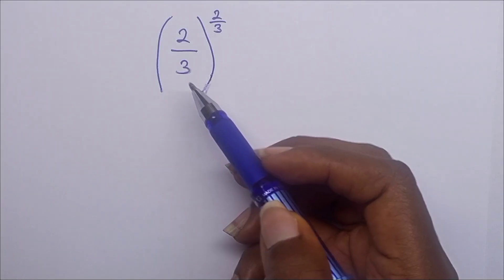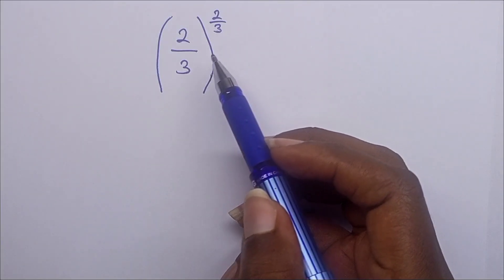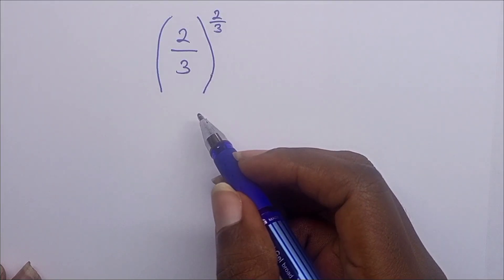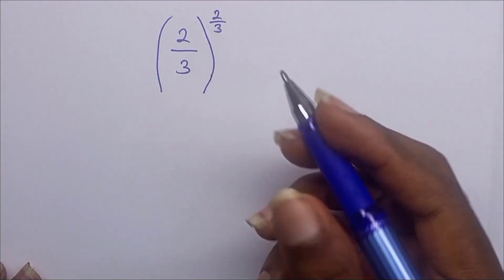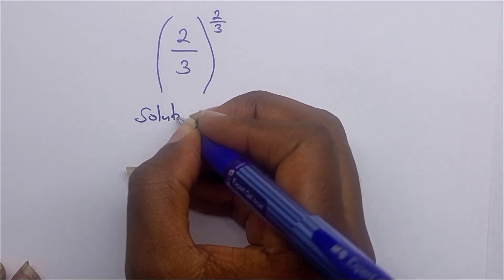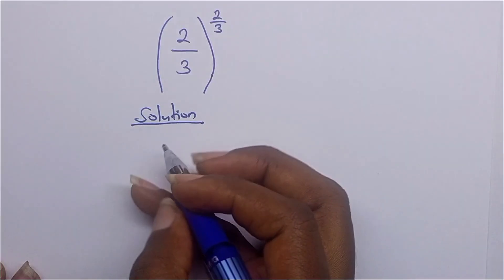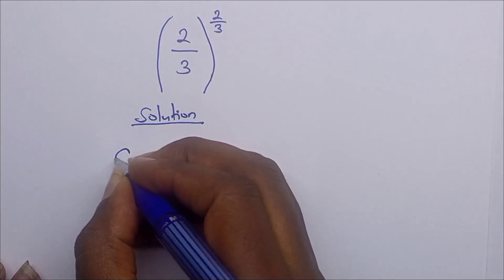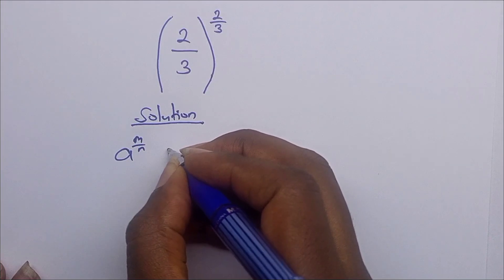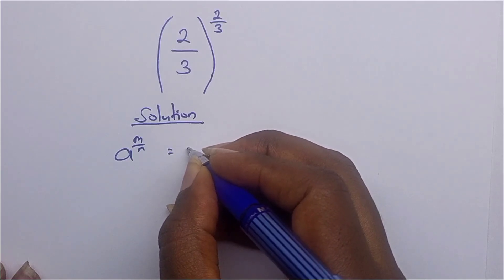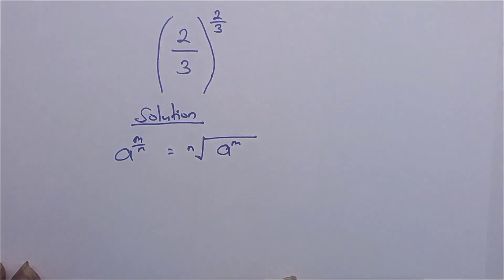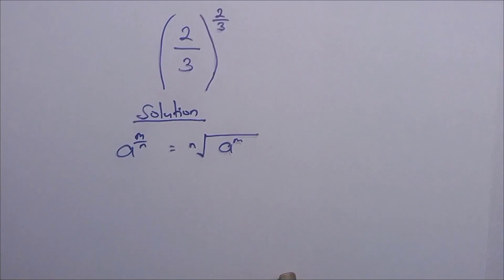We want to simplify (2/3) to the power of 2/3. We know that a to the power m over n equals the nth root of a to the power m.